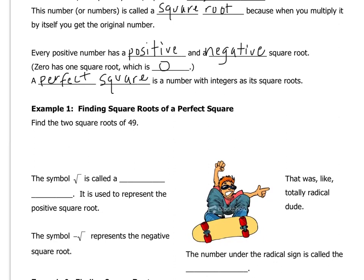So checking out example 1, they just want us to say what the square roots of 49 are. So that would be 7 and negative 7.